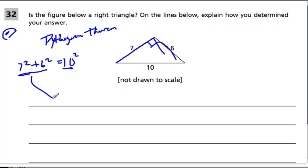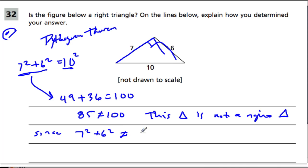You have other types of triangles depending on if this is larger or less than the square of the hypotenuse, I believe. 7 squared, you want to show right here, is 49. Plus 6 squared is 36, and 10 squared is 100. 49 and 36 is 85, and that does not equal 100. So you can state that this triangle is not a right triangle since 7 squared plus 6 squared did not equal 100, as observed by the Pythagorean theorem.